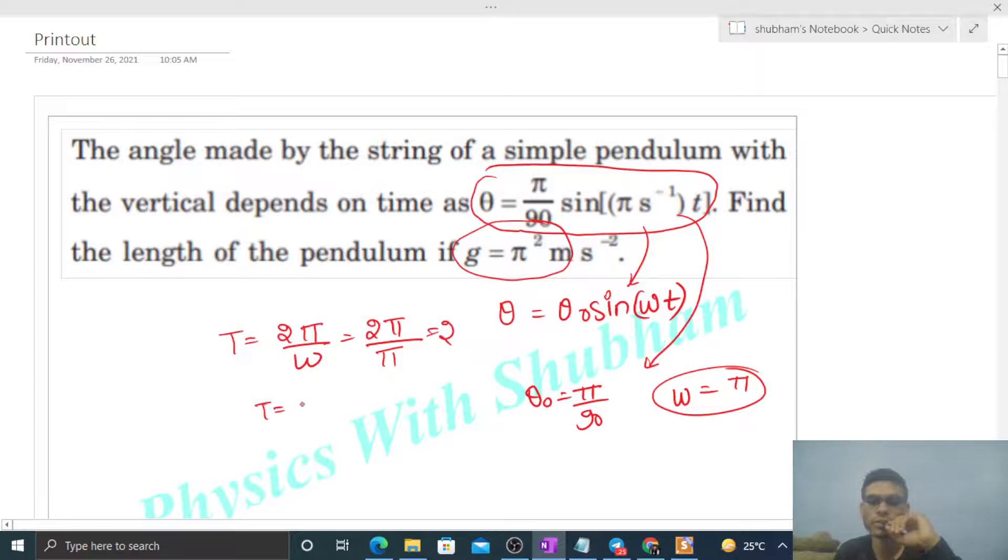How to find the length of the pendulum? Time period is 2pi times the square root of l upon g. Since time period is 2, these 2s cancel out.